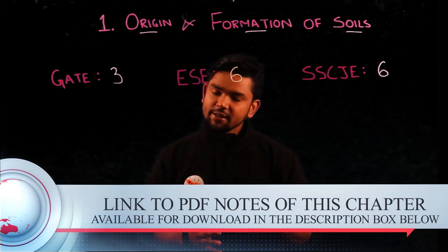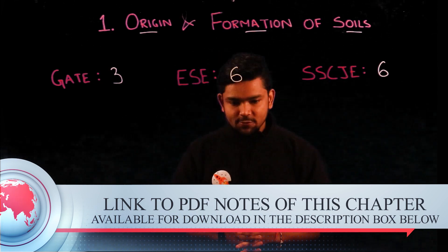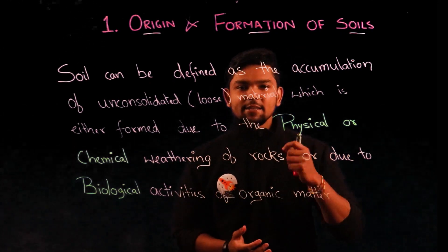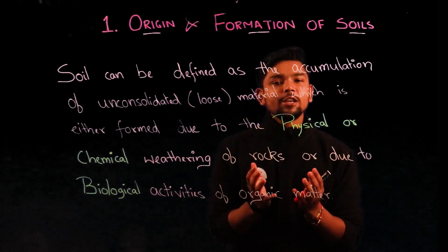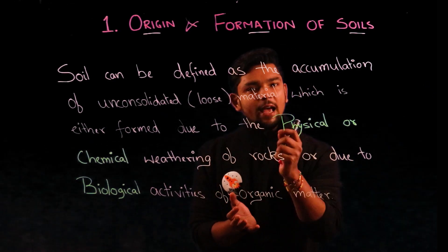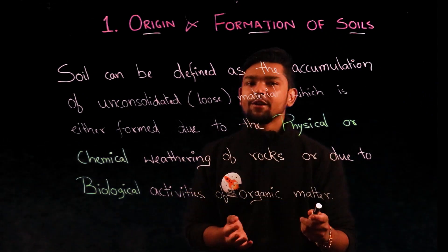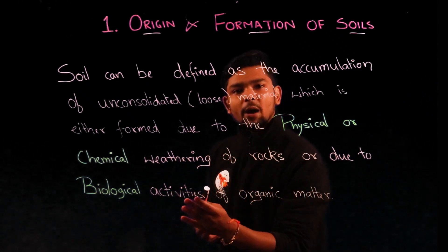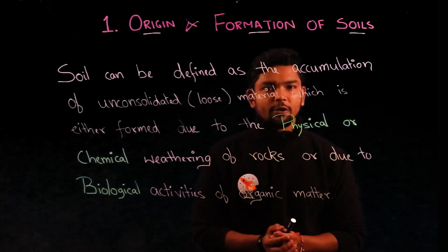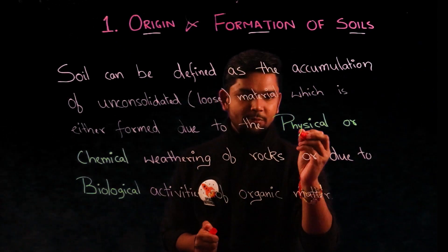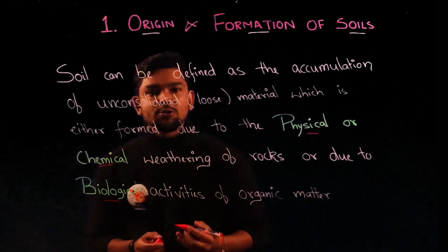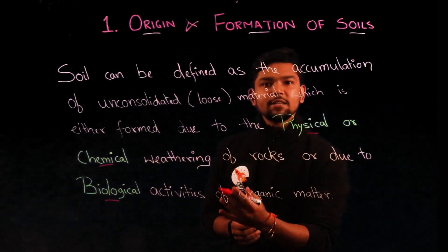Let's start our very first chapter: origin and formation of soil. Soil, as defined by the father of modern geotechnics, Sir Terzaghi, is the accumulation of loose materials over the earth's surface which is formed either due to physical or chemical weathering of rocks, or due to biological activities of organic matter over a longer duration of time. These processes of formation greatly affect the properties of the soil formed.